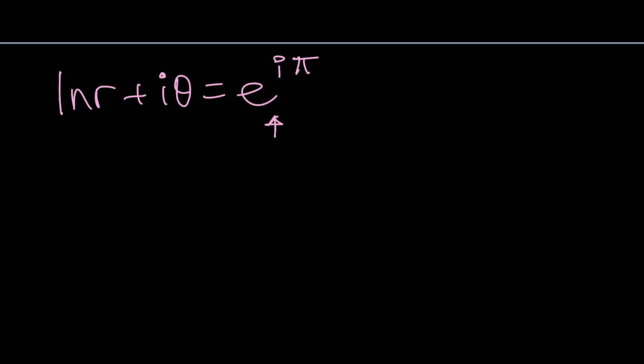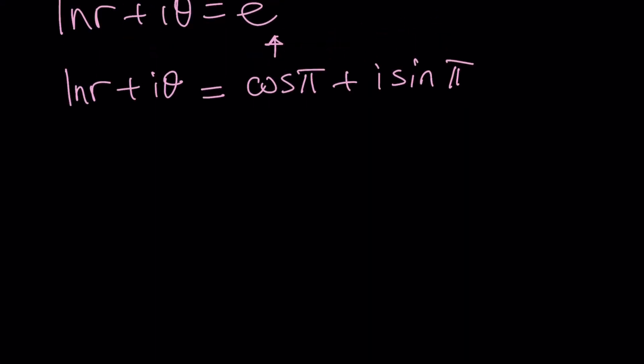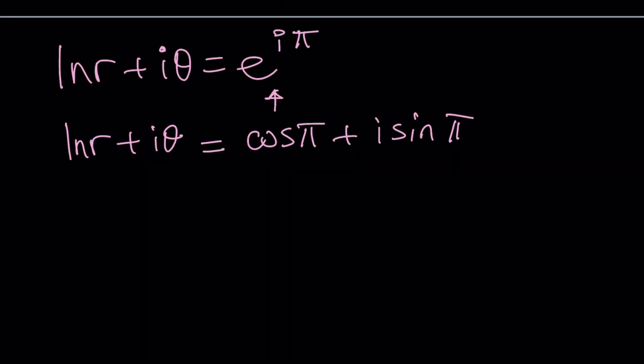Euler's formula allows us to do that thanks to Euler, because he's a great mathematician, maybe the greatest, I think he's the greatest. We can write this as cosine pi plus i sine pi. And set it equal to ln r plus i theta. Remember, our goal is to solve for z. So we need to find r and theta. Wait a minute, didn't we find theta from here? Or did we? Let's find out.